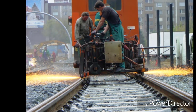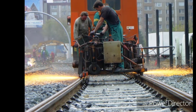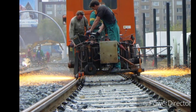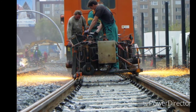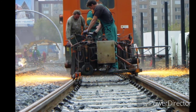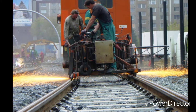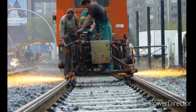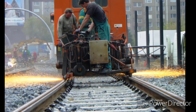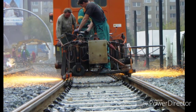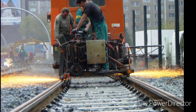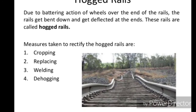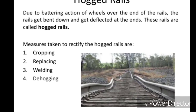The remedial measure adopted is that in Germany corrugations are removed by grinding a few thousandths of a millimeter off the rail heads. For this, special rail grinding trains are used which move at three kilometers per hour while the grinders are in action.